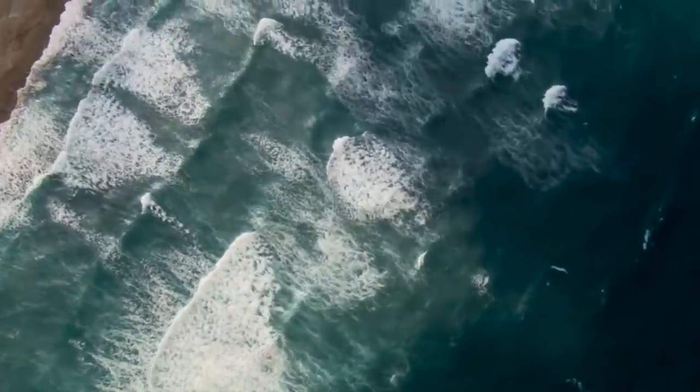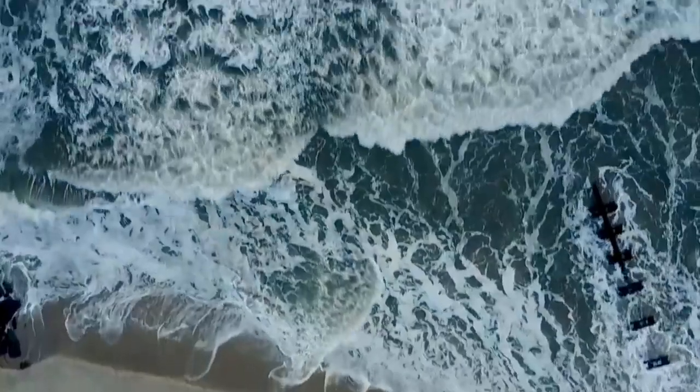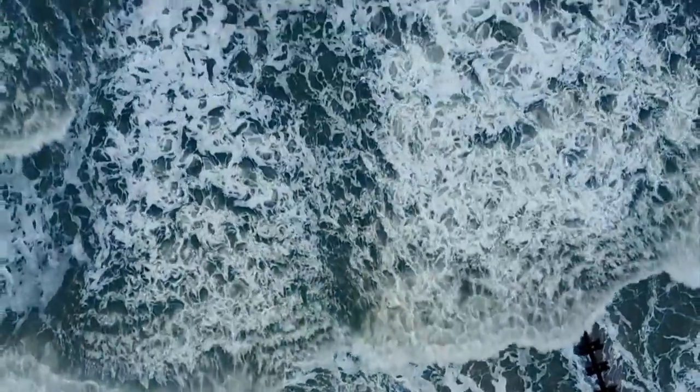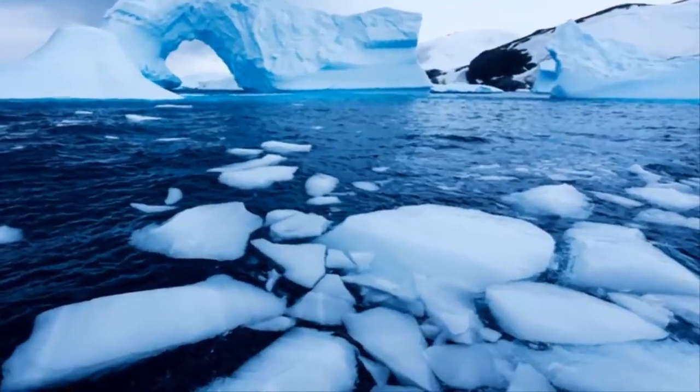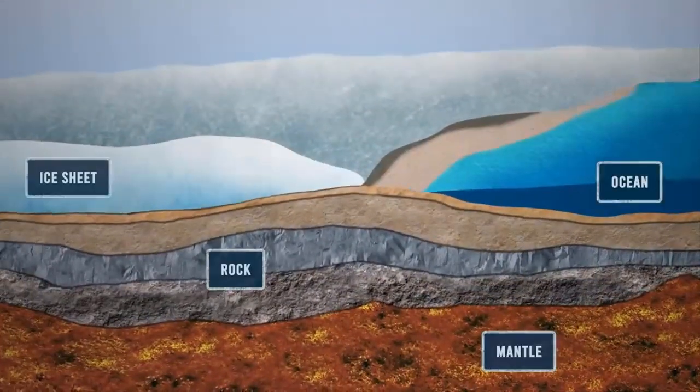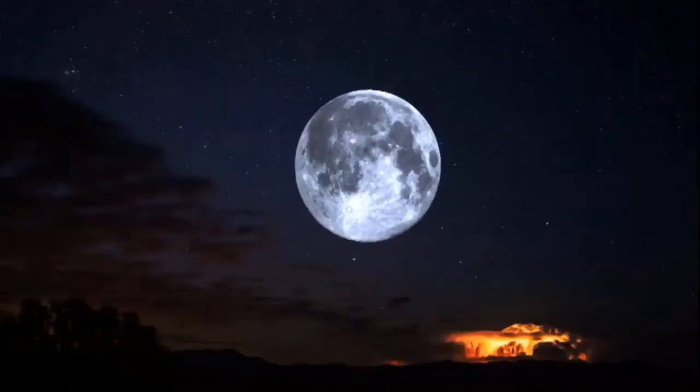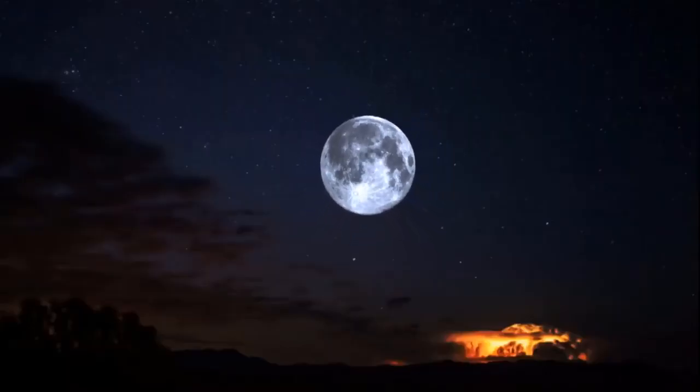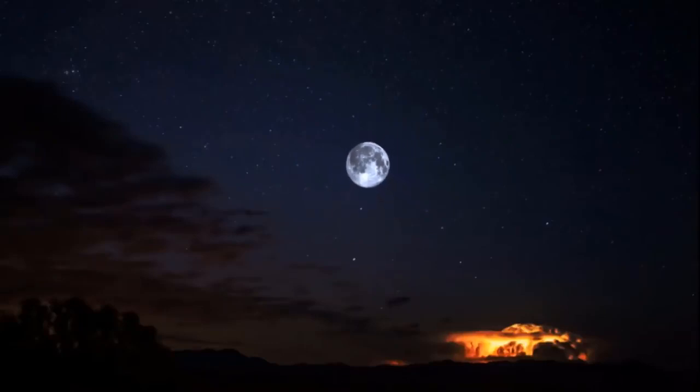Post-glacial rebound, which is the rise of land masses after the removal of the huge weight of ice sheets during the last glacial period, is also changing the distribution of Earth's mass, thus affecting the moment of inertia of Earth and Earth's rotation period.